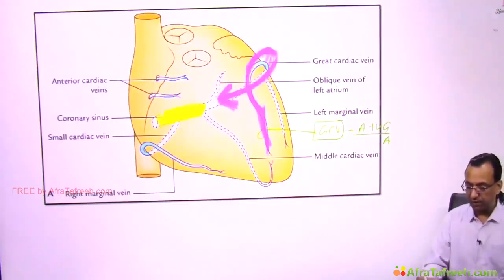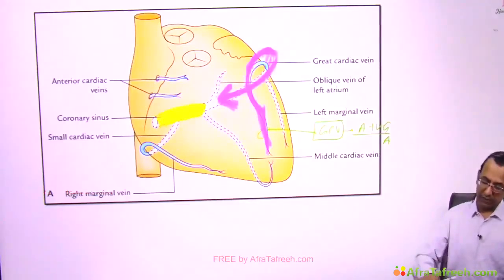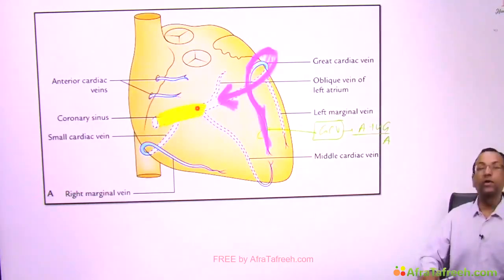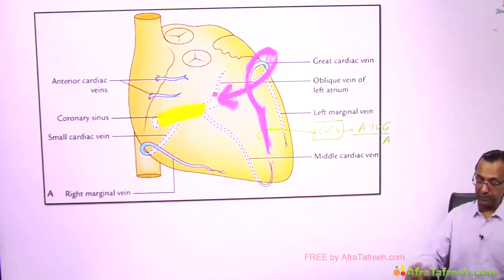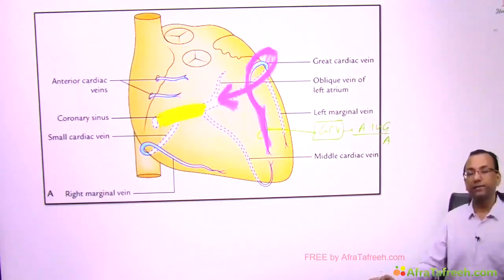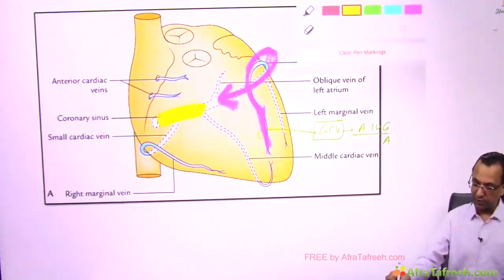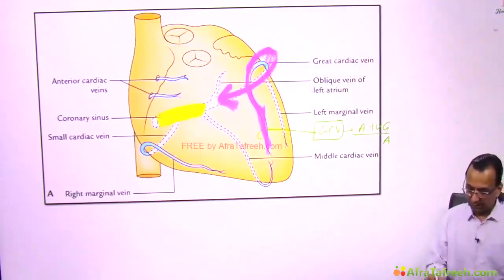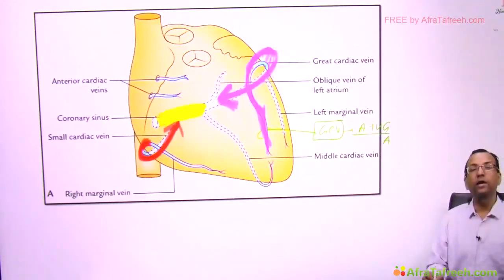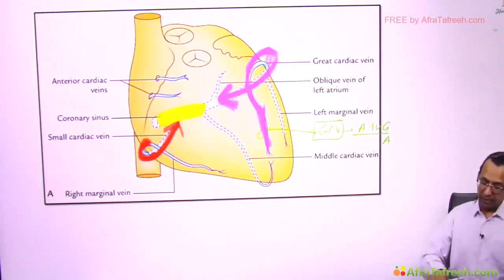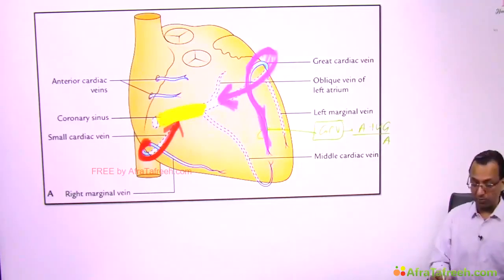The coronary sinus is located on the posterior side in the coronary sulcus, and it receives the great cardiac vein. The small cardiac vein also drains into the coronary sinus, posterior to the heart.